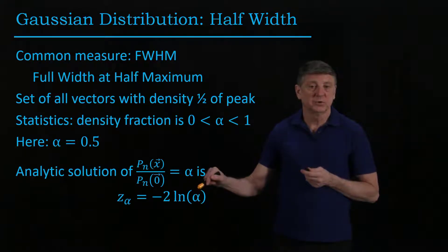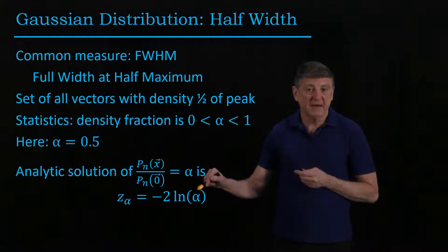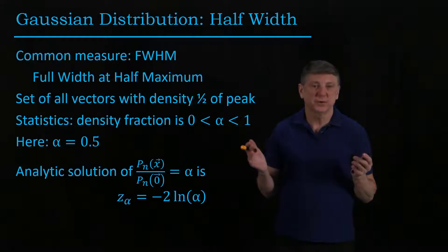So when we set alpha equal to one half, z alpha will be about 1.38.